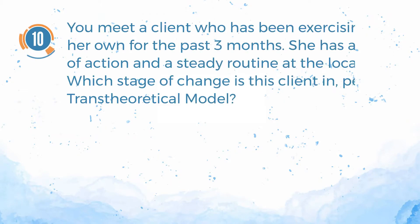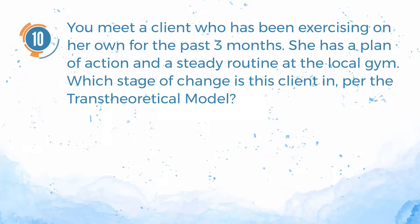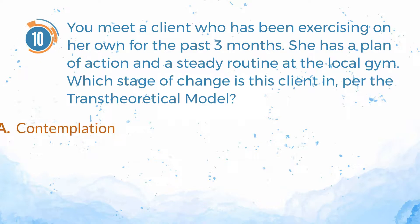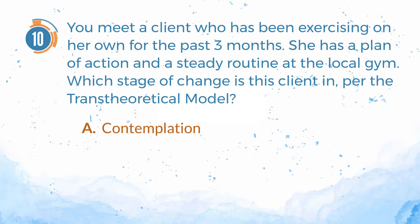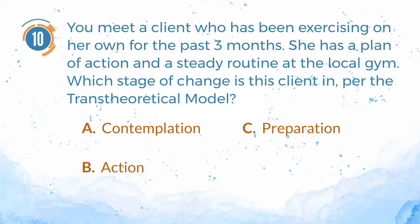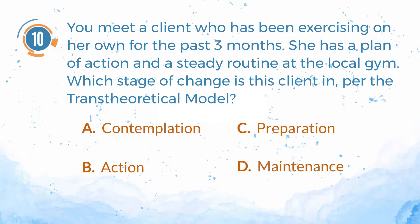Number 10. You meet a client who has been exercising on her own for the past three months. She has a plan of action and a steady routine at the local gym. Which stage of change is this client in, per the transtheoretical model? A. Contemplation. B. Action. C. Preparation. D. Maintenance.